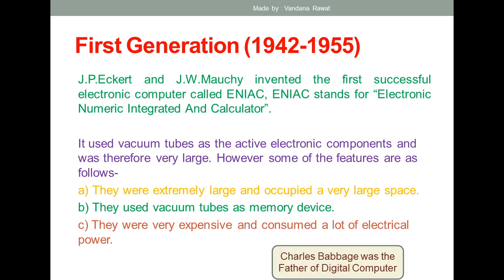The time period for the first generation of computer systems was 1942 to 1955. This time period may vary from book to book or from different sources, so don't get confused — it can be approximate, starting from 1940 or even 1943. I have written the time period as 1942, so just fix that so you don't get confused.